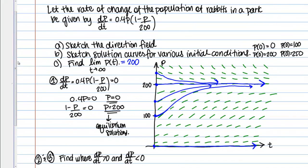So the important things in this video are: one, sketching the direction field for an autonomous differential equation — we use steps where we figure out where the slopes are 0 and where the slopes are positive and negative, and remember it's nice because it's independent of t. And then also just understanding the logistic equation and that behavior is an important thing here as well.